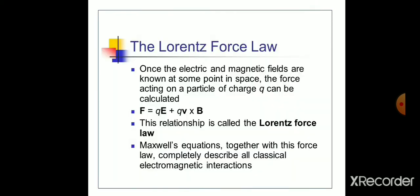According to the Lorentz force law, once the electric and magnetic fields are known at some point in space, the force acting on a particle of charge Q can be calculated as F = QE + Q × V cross B, where capital E represents the electric field and capital B represents the magnetic field. This relationship is called the Lorentz force law.